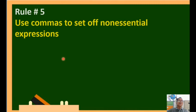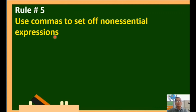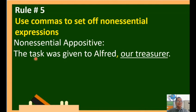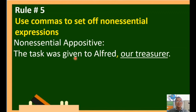Rule number five: use commas to set off non-essential expressions. Example of a non-essential appositive: 'The task was given to Alfred, our treasurer.' Here 'our treasurer' is an appositive giving additional information about 'Alfred.' It is non-essential because you can remove it without changing the idea: 'The task was given to Alfred.' Since nothing changes, use a comma before the appositive. For the essential appositive: 'The task was given to our treasurer, Alfred.' Here 'our treasurer' is essential; removing it changes the meaning, so no comma is needed.